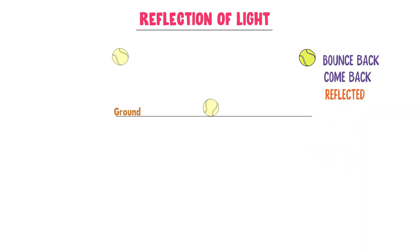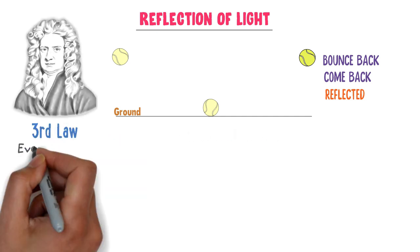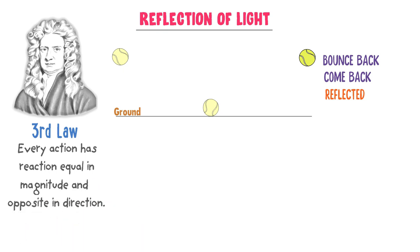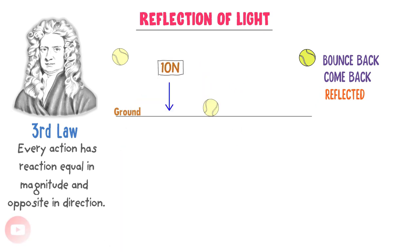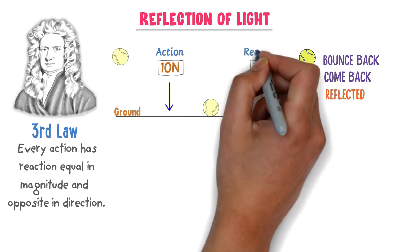If you ask why this ball comes back or why it is reflected by the surface, the answer is very simple. According to Newton's third law of motion, every action has a reaction equal in magnitude but opposite in direction. For example, if the ball exerts 10N force in this direction on the ground as an action, the ground exerts 10N force on the ball in the opposite direction as a reaction.